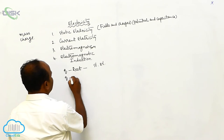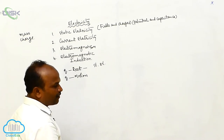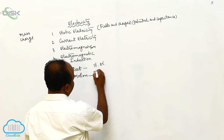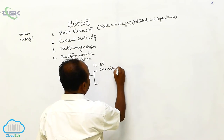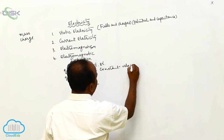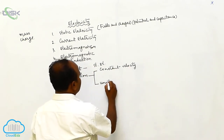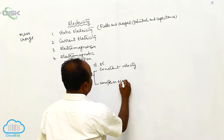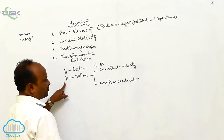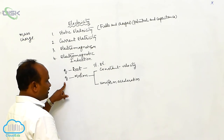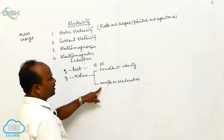Whenever the charge is under motion, there are two possibilities: the charge may move with a constant velocity, or the charge may move with a uniform acceleration.